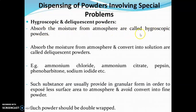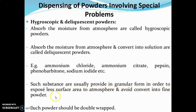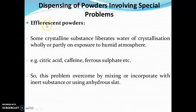The second problem is hygroscopic and deliquescent powders. Powders that absorb moisture from the atmosphere are called hygroscopic powders. Powders that absorb moisture from the atmosphere and convert into solution are called deliquescent powders. Examples include ammonium chloride, ammonium citrate, pepsin, phenobarbitone, sodium iodide, etc. Such substances are usually provided in granular form to expose less surface area to the atmosphere, and should not be converted into fine powder. Such powders should be double wrapped.